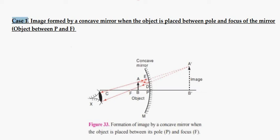Case 1: Image formed by a concave mirror when the object is placed between pole and focus of the mirror, that is object between P and F.